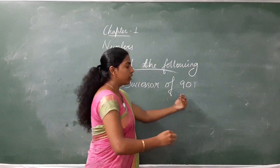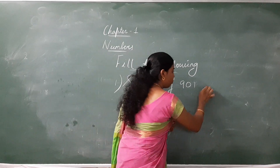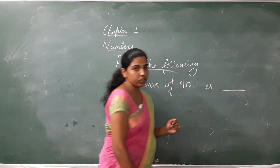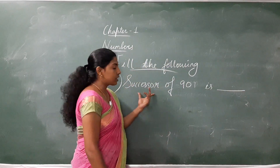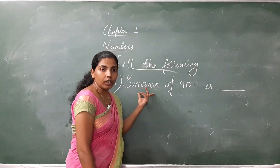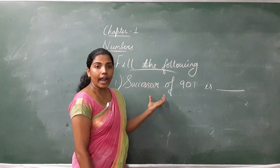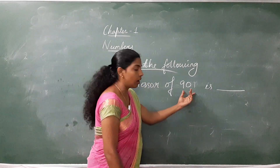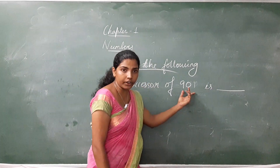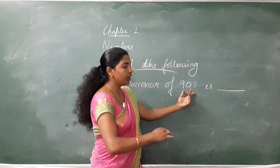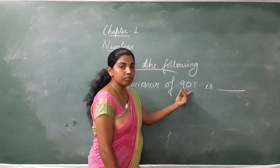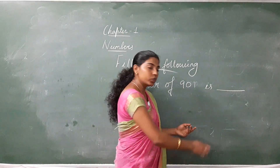Successor of 901 is blank. Successor means we have to add 1 to the given number. The number is 901. When we add 1 to that number, it becomes 902.